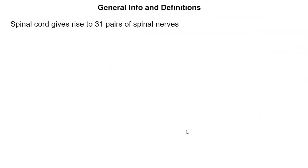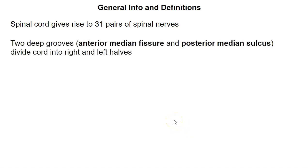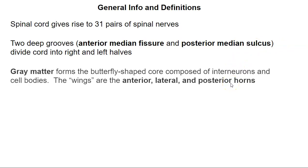Here's some general info and definitions. The spinal cord gives rise to 31 pairs of spinal nerves. There are two deep grooves: the anterior median fissure and the posterior median sulcus. In the spinal cord, gray matter forms the butterfly-shaped core and is composed of interneurons and cell bodies — they're unmyelinated, which is why they appear gray.